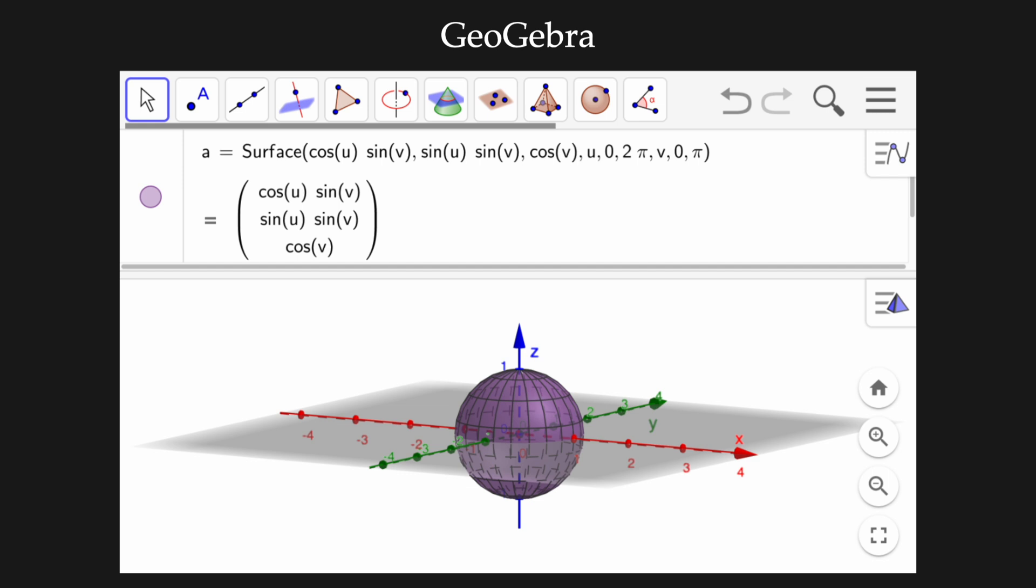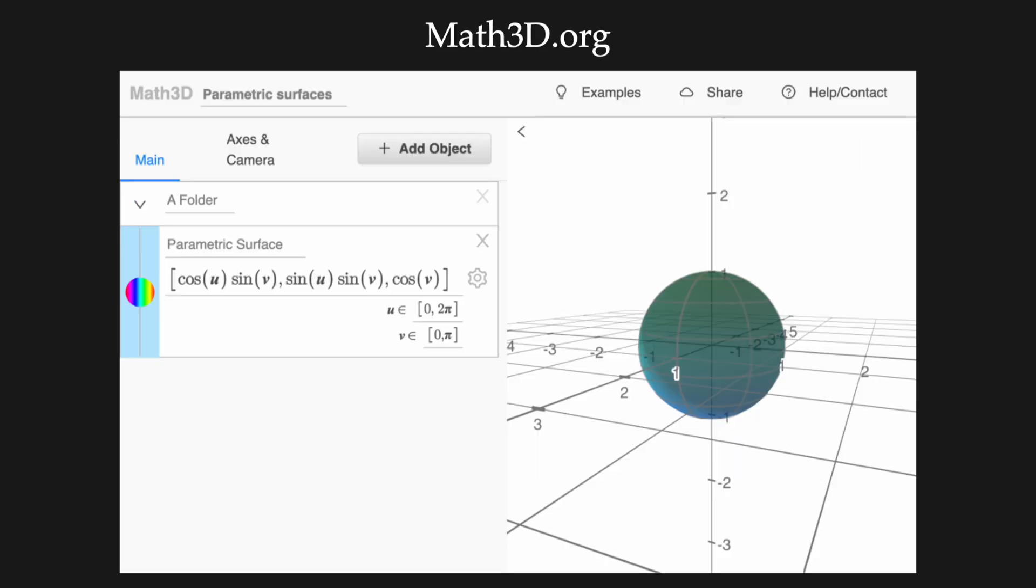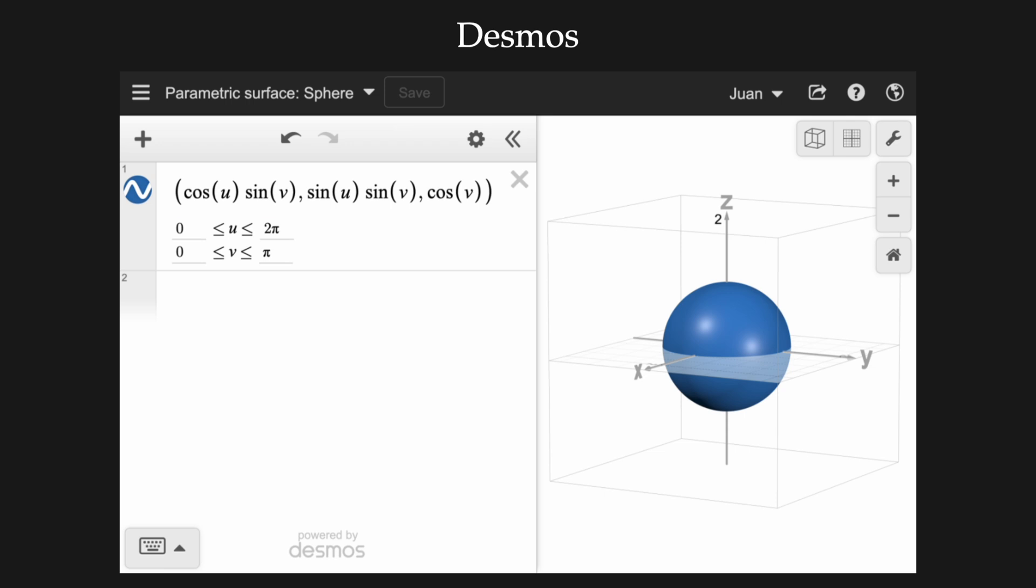We can easily plot and explore all kinds of parametric surfaces using open source mathematical software. For example in GeoGebra you can use the command surface. You just need to input the components and the region where u and v are defined. If you prefer, you can also use math3d.org or Desmos where the syntax for parametric surfaces is slightly easier to type. Check the links in the description.